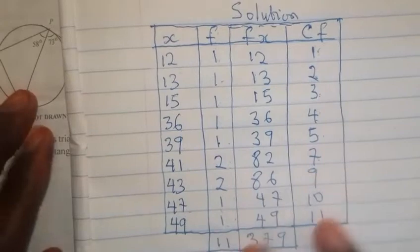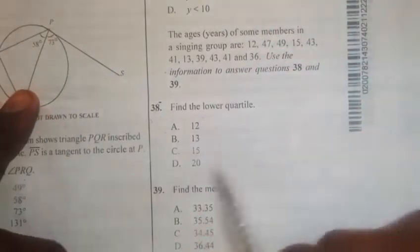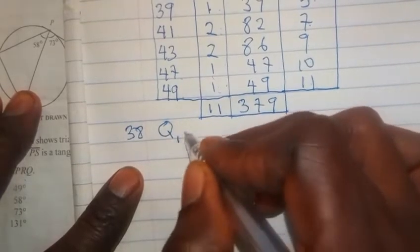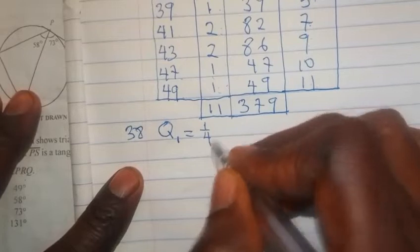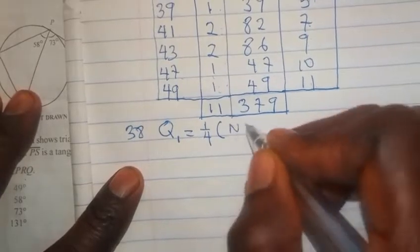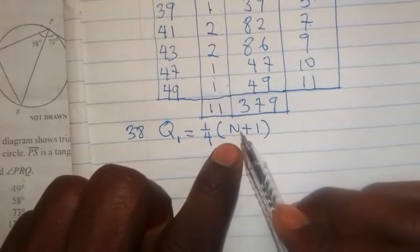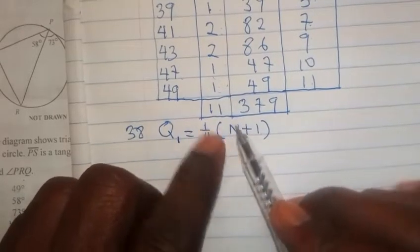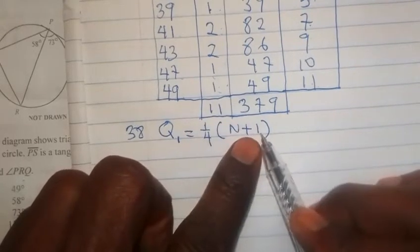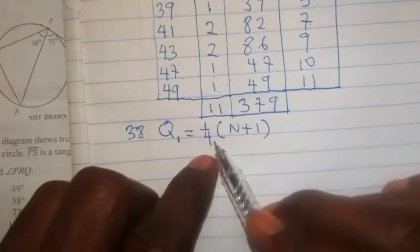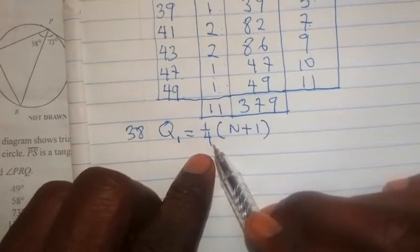Now, let us see how to apply this by going into question 38. Now, in question 38, we are told to find the lower quartile. Now, the lower quartile has a formula. The formula for the lower quartile is Q sub 1, and that will equal to 1 upon 4 into n plus 1. Now, I am using this n plus 1 because the n talks about the total number of frequencies given to us, which in this case is what? 11. We are adding 1 to it because the 11 is odd. Alright? So, we have to make it even before we divide by what? By 4.